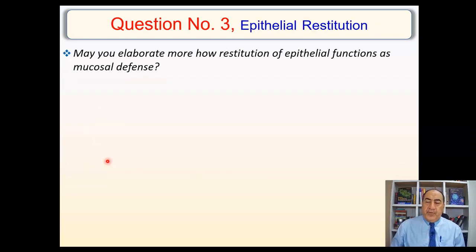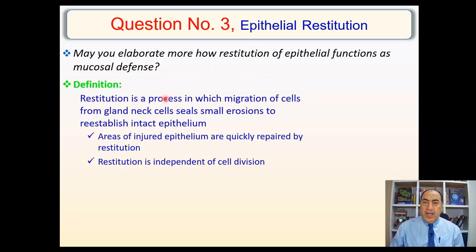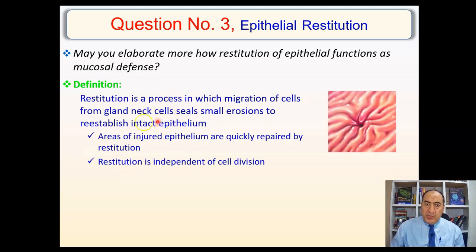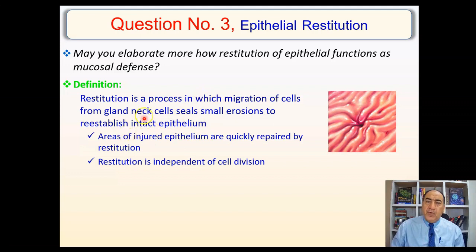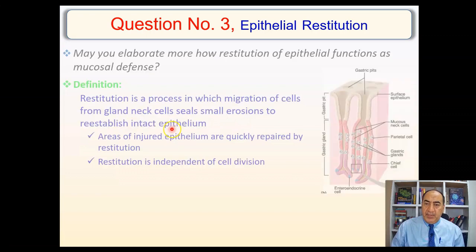Question number three: epithelial restitution — what is it and how does it function as a mucosal defense? Epithelial restitution is a process in which migration of cells from the gland-like cells seals small erosions to reestablish intact epithelium. So cells will migrate from the gland-like cells — specifically the mucous neck cells — to seal erosions and reestablish the intact epithelium.